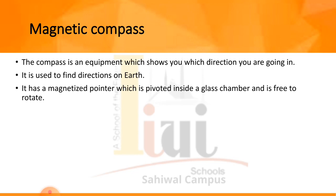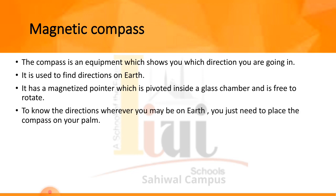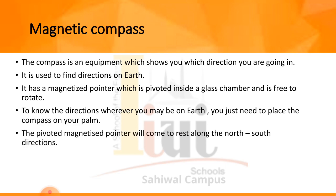The compass has a magnetized pointer which is pivoted inside a glass chamber and is free to rotate. To know the direction wherever you may be on earth, you just need to place the compass on your palm. The pivoted magnetized pointer will come to rest along the north-south direction. The markings on the dial will show the actual geographical direction.